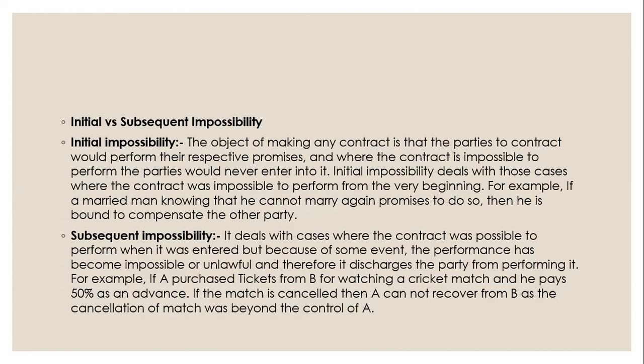There are two kinds of impossibilities: initial and subsequent. Initial impossibility arises where the contract was impossible to perform from the very beginning. For example, if a married man knowing he cannot marry again promises to do so, he is bound to compensate the other party. Subsequent impossibility deals with cases where the contract was possible to perform when entered upon, but because of some later event, performance has become impossible or unlawful. For instance, if A purchases tickets from B for a cricket match and pays 50% in advance, and the match is cancelled, A cannot recover from B as the cancellation was beyond the control of B.